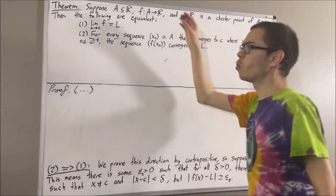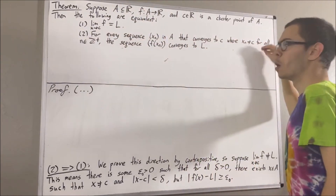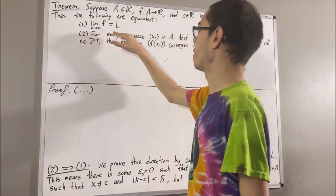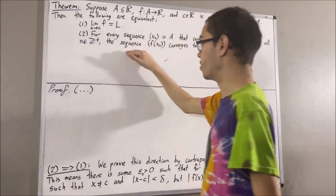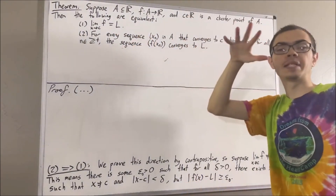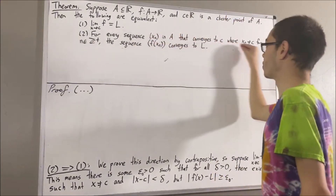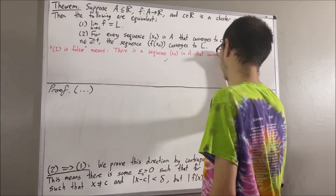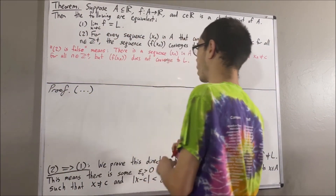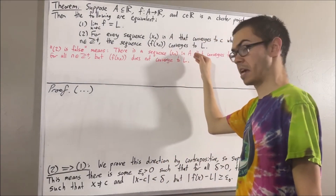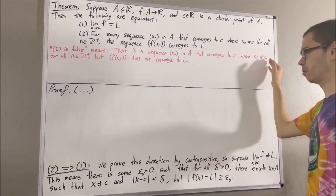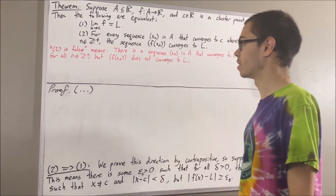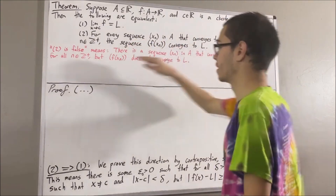We've assumed one is false, and the whole goal is to prove that two is false. To say that two is true means for every sequence in A with this property, F of Xn converges to L. The opposite is to say there exists a sequence in A with this property where F of Xn does not converge to L. In other words, there is a sequence Xn in A that converges to C, where Xn is not equal to C for all positive integers N, but the sequence F of Xn does not converge to L.